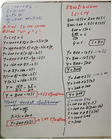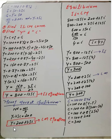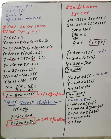Now for the money market equilibrium: money demand equals money supply. We set Y minus 25r equal to 200. Rearranging by moving minus 25r to the right-hand side: Y equals 200 plus 25r. This is the LM equation.